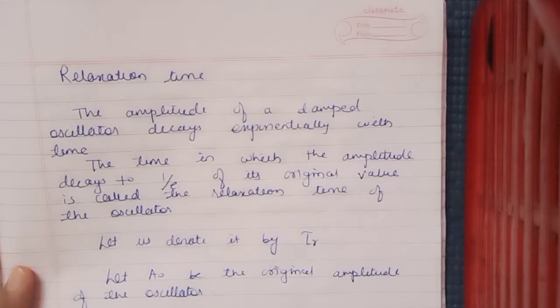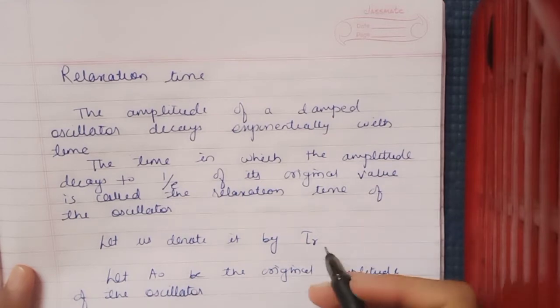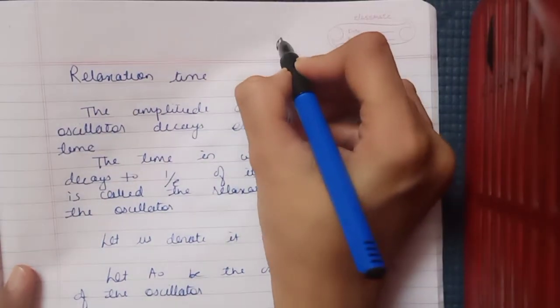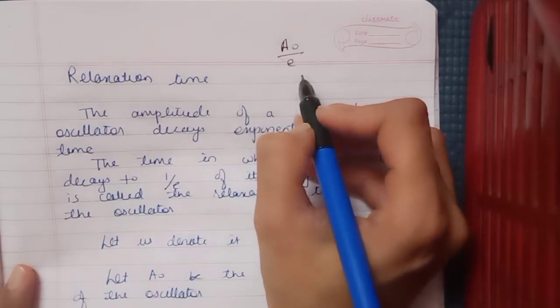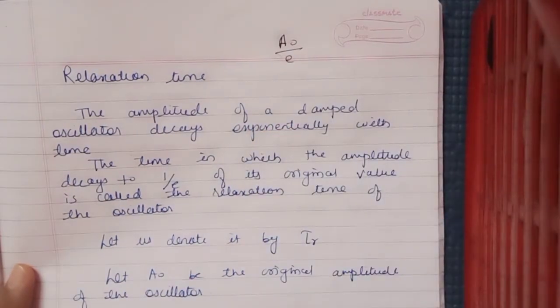in which the amplitude decays to 1/e of its original value. Suppose the original value is A₀, so the time taken for the amplitude to become A₀/e is the relaxation time of the oscillator.